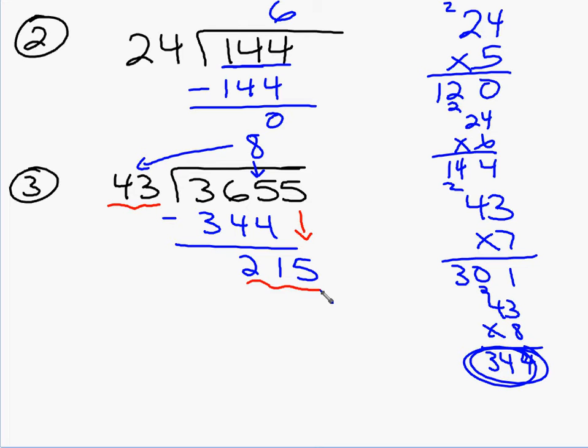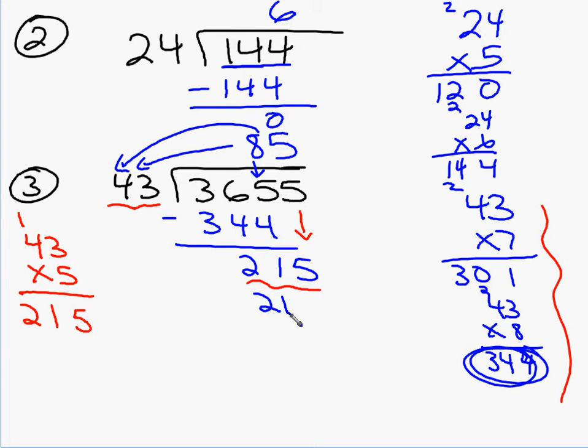How many 43s are in 215? So didn't we already try some things over here? Didn't we try 43 times 7 and it was 301? So we need to try something less than that. Somebody said we should try 43 times 5. And this multiplication part is the key to doing this. 5 times 3 is 15. Carry a 1. 20 plus 1 is 21. There it is. So I put a 5 here. 5 times 43 is 215. I subtract and get a 0.